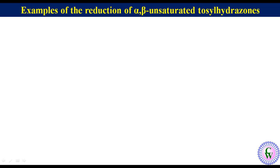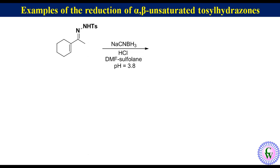Now for an example of reduction of alpha-beta unsaturated tosylhydrazone under Hutchins conditions: tosylhydrazone of cyclohexenyl methyl ketone, when treated with sodium cyanoborohydride in the presence of a catalytic amount of HCl in DMF and sulfolane, produces ethylidenecyclohexane with 79% yield.